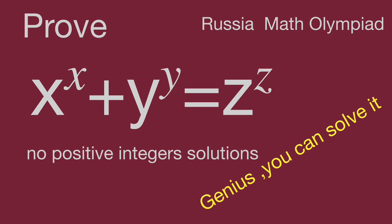If x, y, and z are positive integers, prove there is no solution to the equation x^x + y^y = z^z. Would you please prove it?